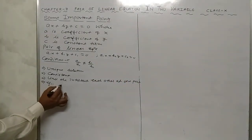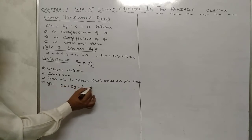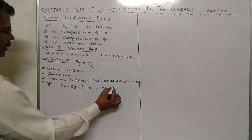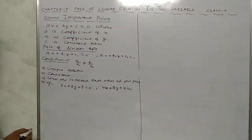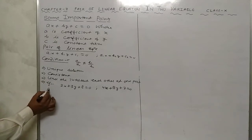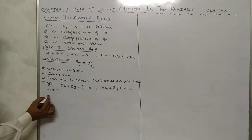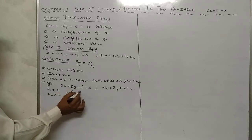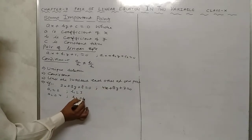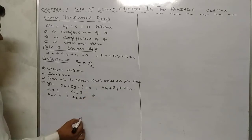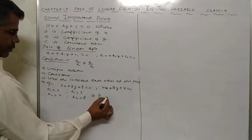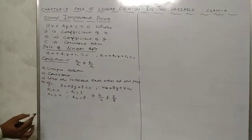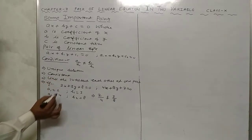Example: 2x plus 3y plus 8 equals to 0, and 4x plus 8y plus 7 equals to 0. On comparing, we have a1 equals to 2, a2 equals to 4, b1 equals to 3, and b2 equals to 8. We see that 2 upon 4 is not equal to 3 upon 8, so this gives a unique solution — consistent — and the lines intersect each other.